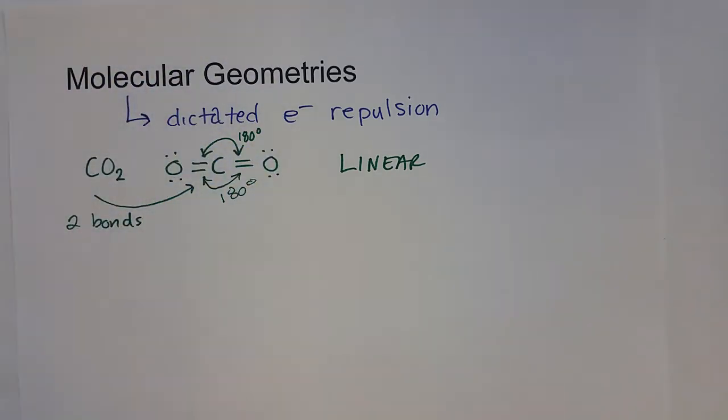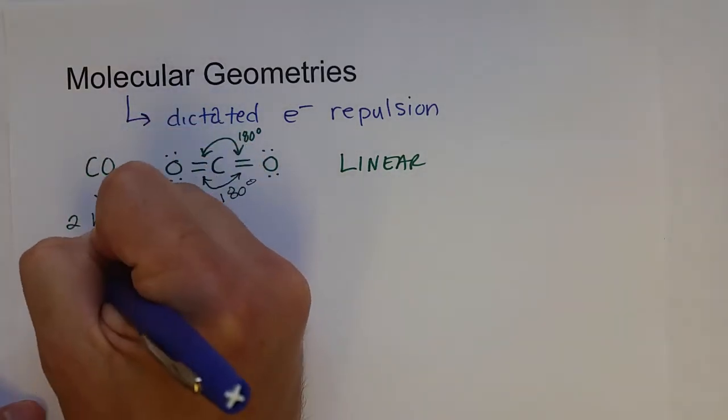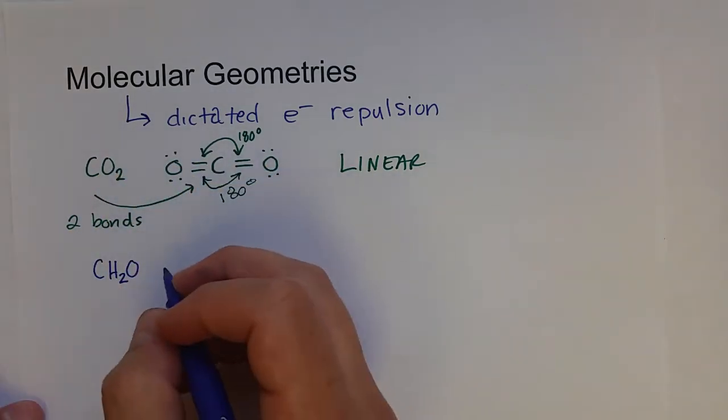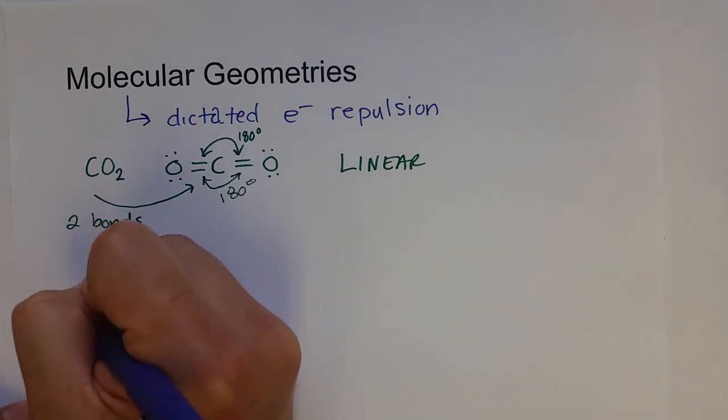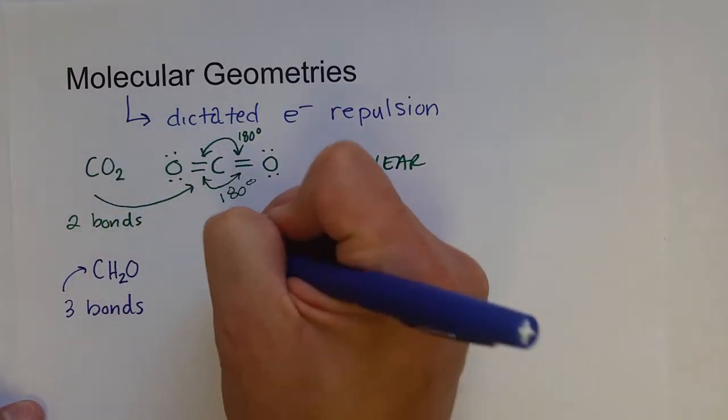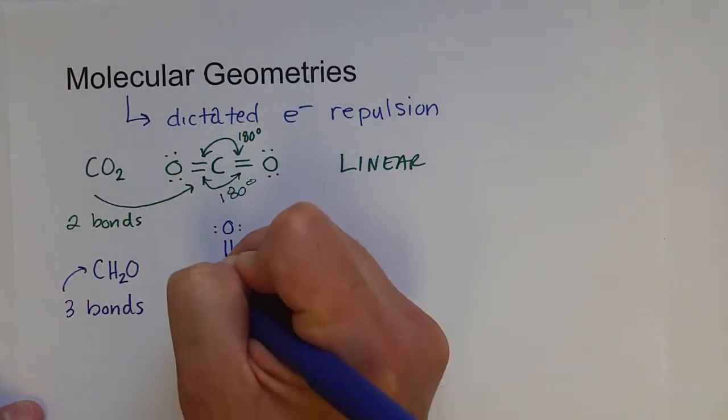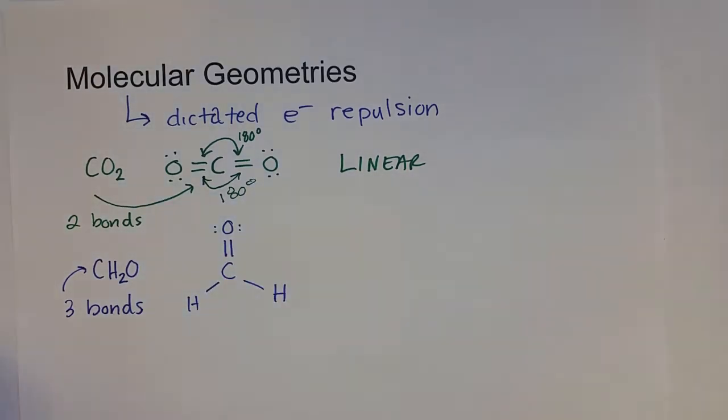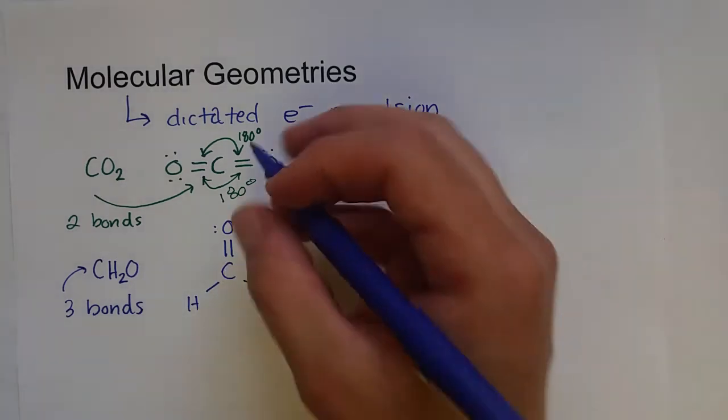You can also have molecules with three bonds, like CH2O, where the carbon will have a double bond between the oxygen, and then a single bond with each hydrogen atom. So now that we have three electron groups, three bonds repelling each other.